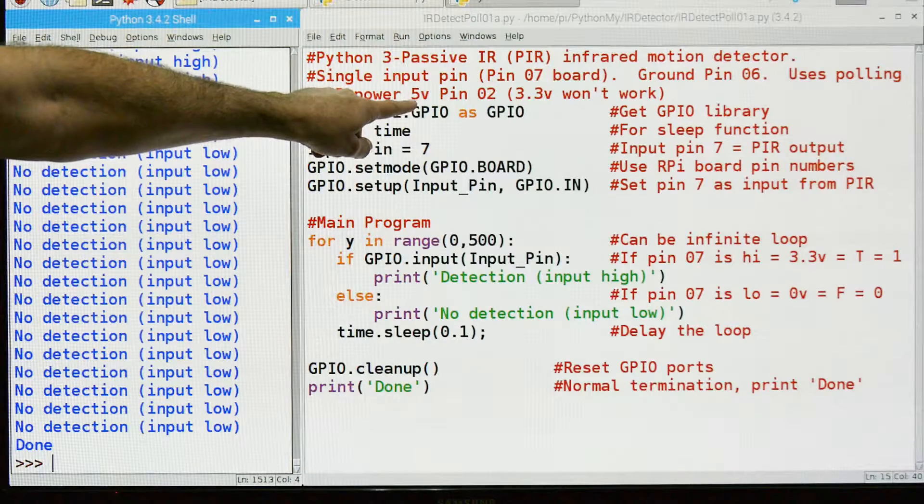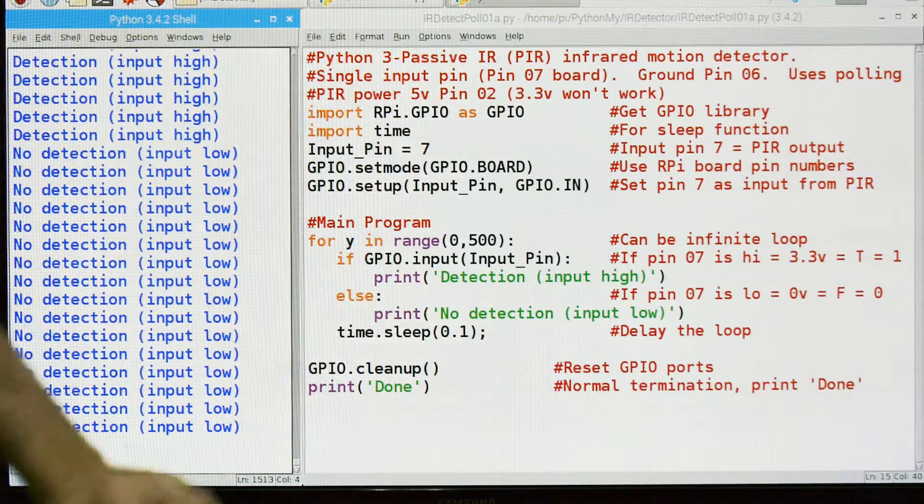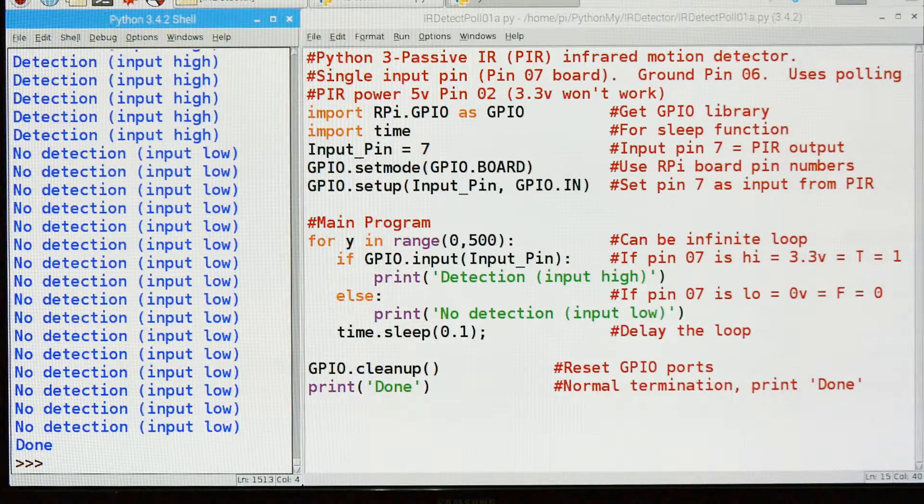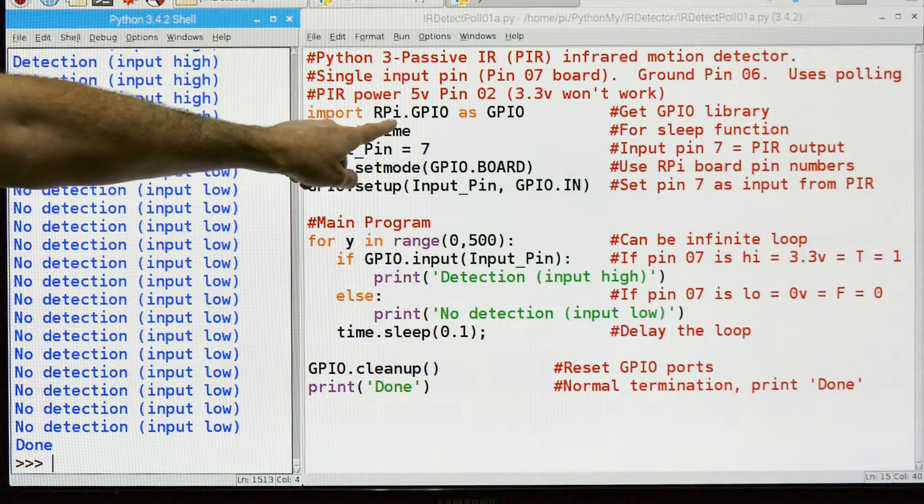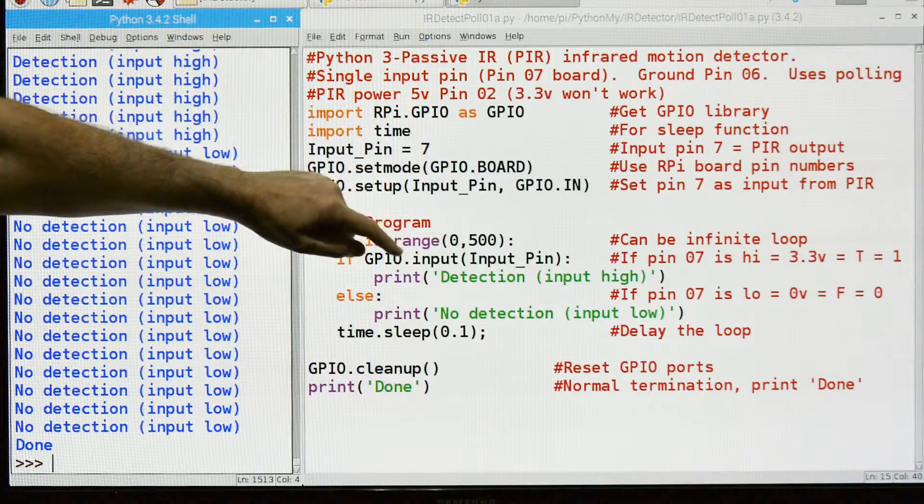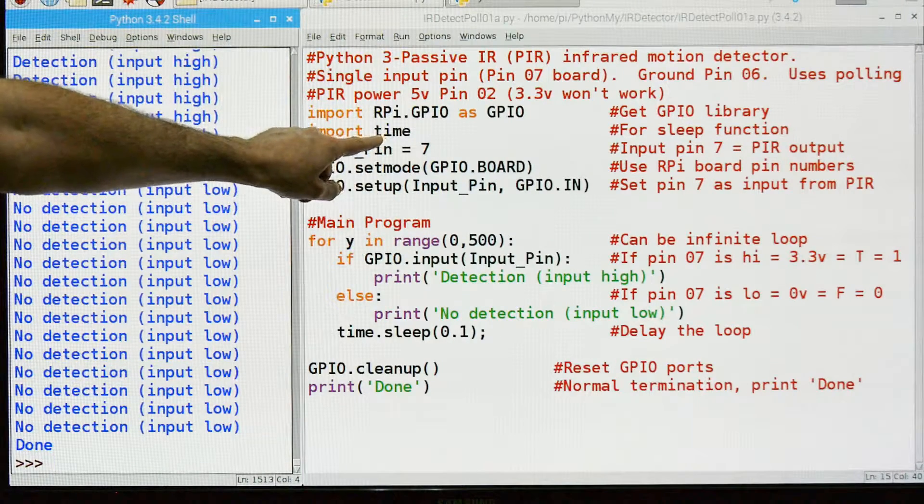So the PIR power is 5 volts. It's pin 2. I tried with 3.3 volts from the Pi. It does not work. So you have to use the 5 volt source from the Pi. We're going to import the RPI GPIO so we can use the pins. We're going to import time so we can use a time delay.